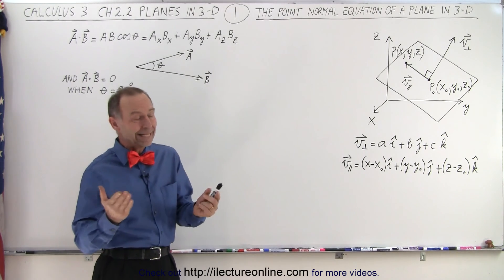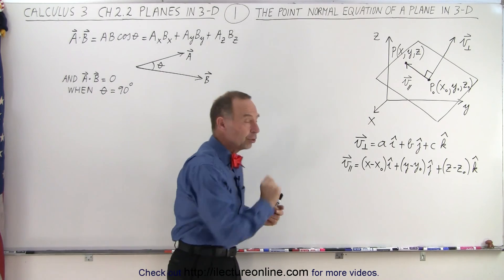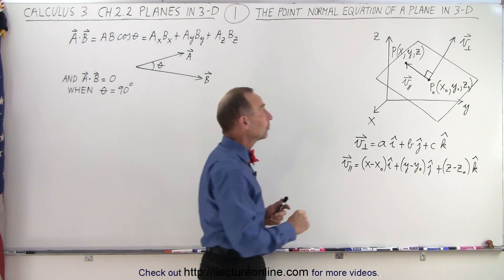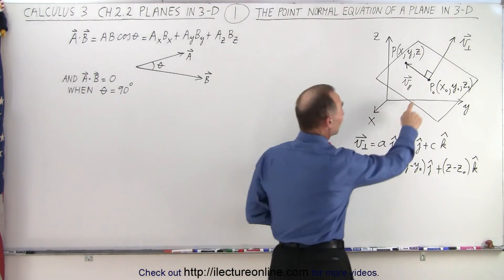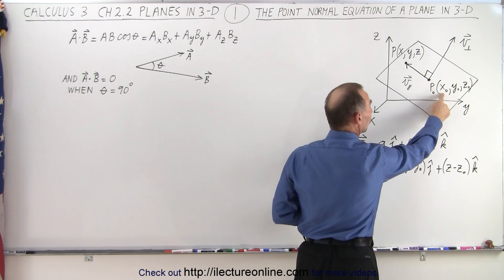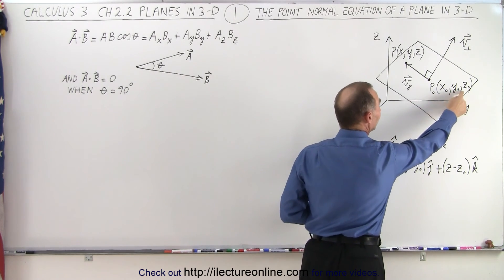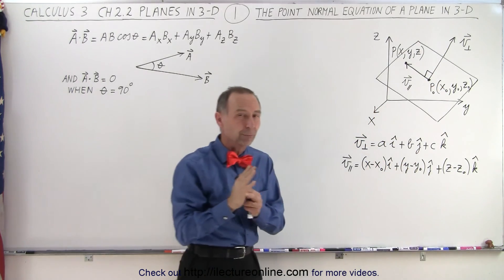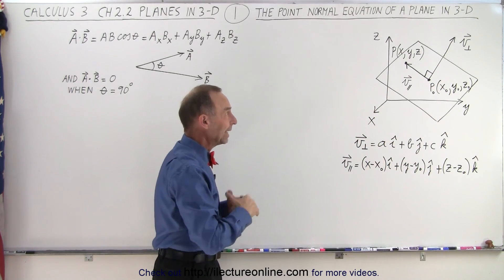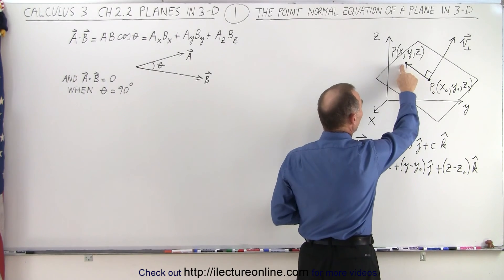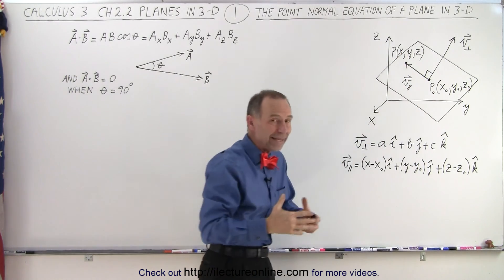So let's say that we have a point right here, which is a known point with known coordinates x, y, and z. And let's say we have a known vector perpendicular to the plane. And then we pick any other point on the plane, let's call it point P, which has coordinates x, y, and z.